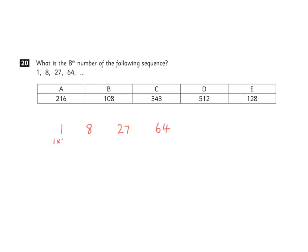1 cubed is 1 times 1 times 1. This of course is 1. 8 is 2 cubed, 2 times 2 times 2, that makes 8. 27 is 3 cubed, 3 times 3 times 3. And 64 is 4 cubed, 4 times 4 times 4.